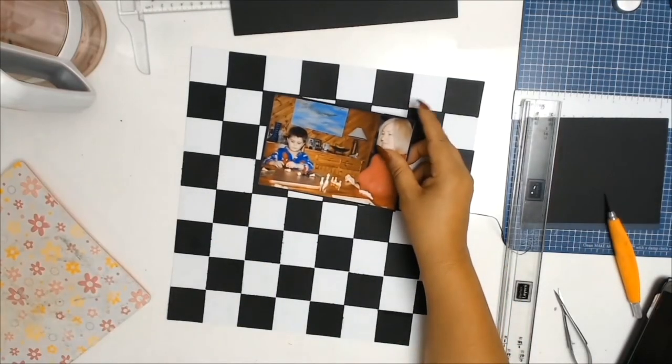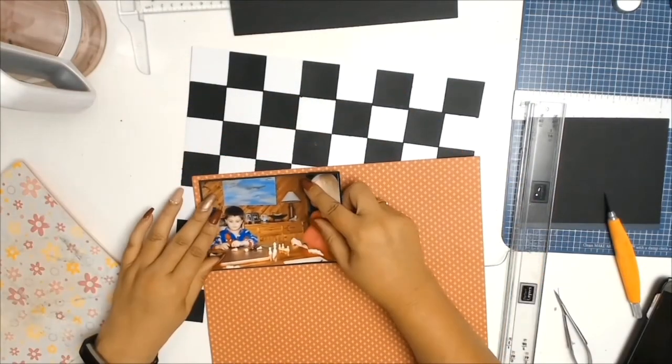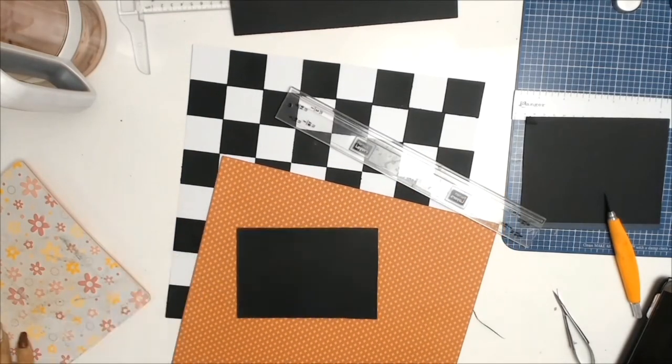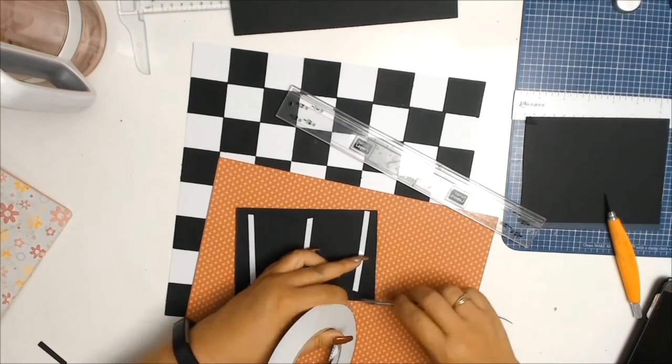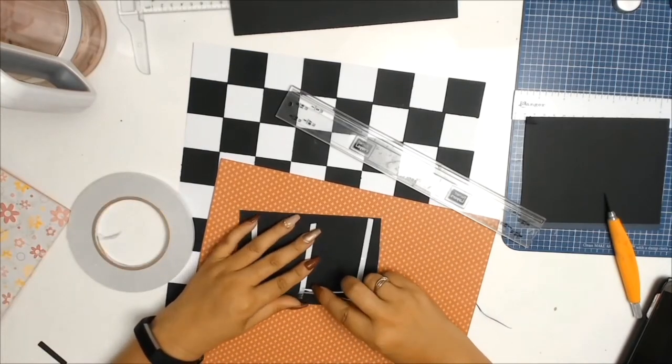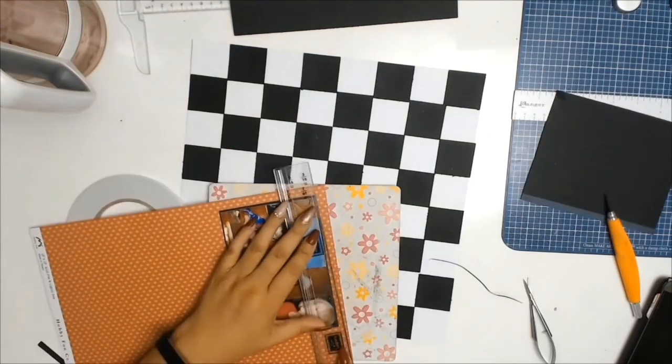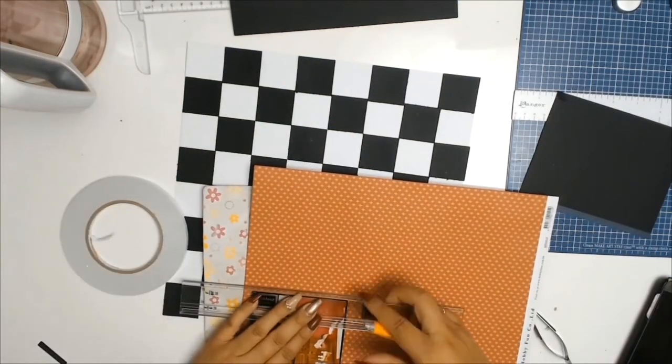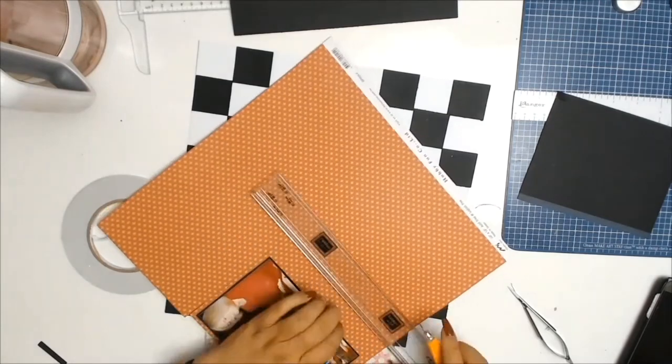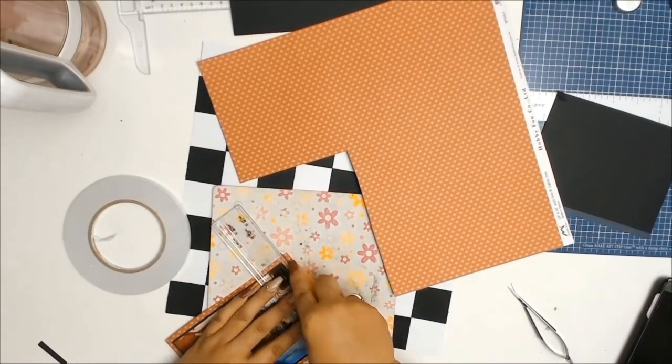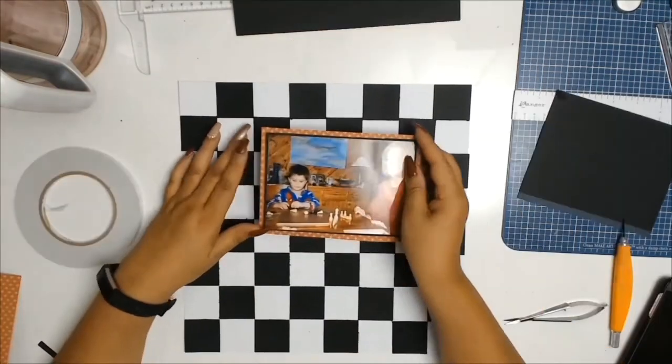I will be making a second matte on my photos and this time I will be using some red patterned paper from my stash. And I once again will be using my perfect layers ruler to do a 4.8 millimeter matte all around. You know, you can only be precise like that with a perfect layers ruler and I must admit this is one of my favorite tools for matting my photos.